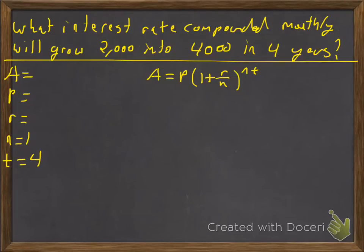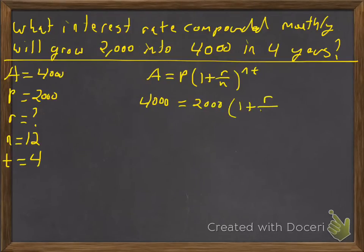And n is the number of compounds per year, t is time. So they tell us it's going to be four years. Compounded monthly means once a month, and there's 12 months, so that'll be 12. Interest rate is we don't know. Principle is we're starting out with 2000 and amount is 4000. So we're going to plug that in. So you have 4000 is equal to 2000 times 1 plus r over 12 raised to the 12 times 4.